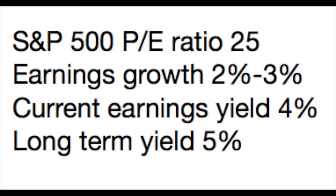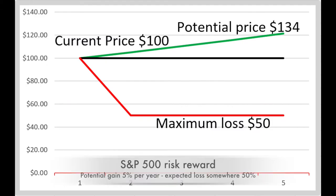Let's check how this asymmetric risk-reward concept applies to the current market. The S&P 500 price-to-earnings ratio is currently 25. Earnings will grow alongside the economy, which is expected to grow at 2–3% per year long term. The current earnings yield is 4%, and with 2–3% growth attached, that gives a potential gain of about 5% per year. Don't be fooled by recent earnings growth — earnings over the last 10 years are flat.